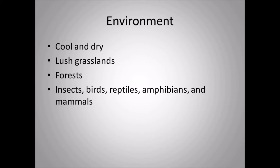The environment Homotherium lived in was cool and dry — not very warm — with lush grasslands and forests, because this was during the beginnings and near the end of the ice age. In southern parts of North America like Texas, it was much cooler than today — back then the highest temperatures would probably have been around 80 to 90 degrees, compared to the 110 degrees Texas can reach on a very hot summer day now. Of course there were plenty of animals: insects, birds, reptiles, amphibians, and all the big mammals that were around too.